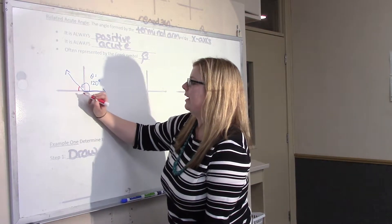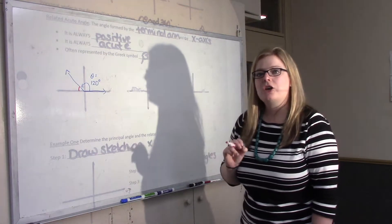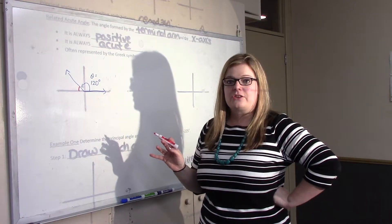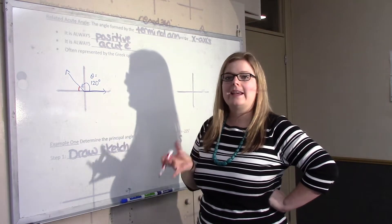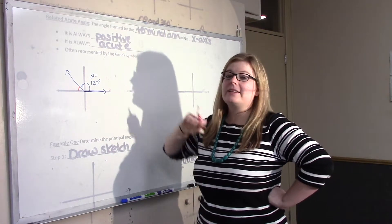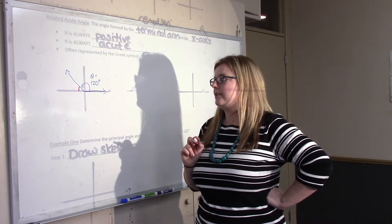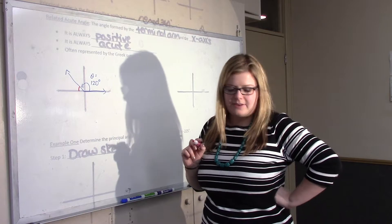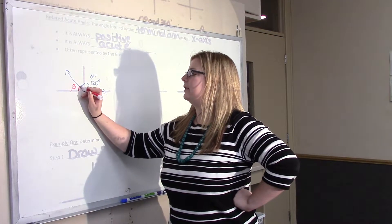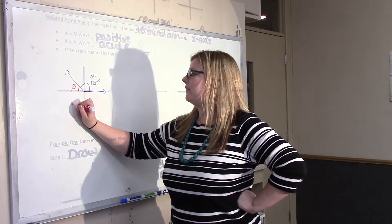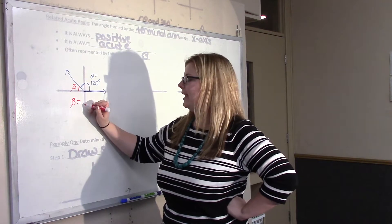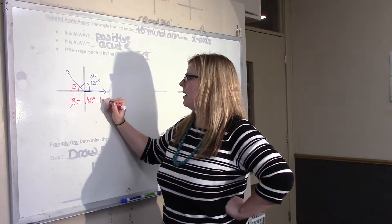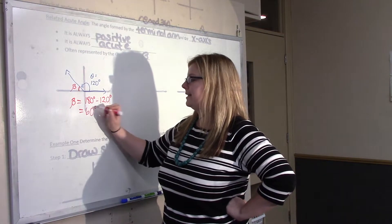In this quadrant, beta would be right here. Notice I'm not drawing any arrow indicating direction, because there never is direction — the related acute angle is always positive, never negative. It's always positive and always acute, meaning between 0 and 90 degrees. So we label this beta. If we went all the way to 180 but we've taken 120 of that 180, we do 180 degrees minus 120 degrees, so beta is 60 degrees.